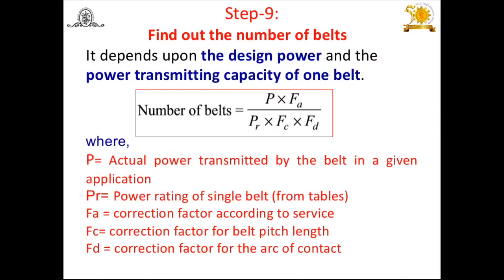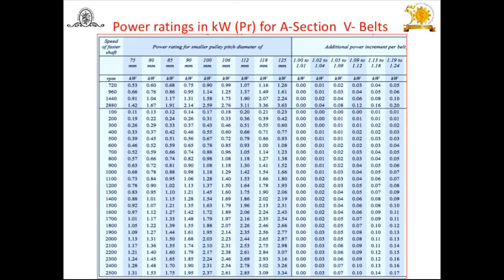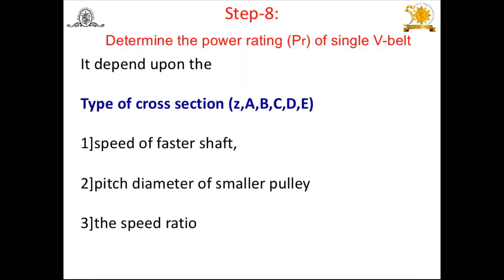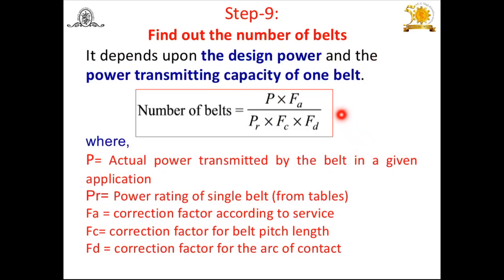Step 9 (final step): Find the number of belts N using the expression: N = (P × FA) / (PR × FC × FD), where P is the actual power transmitted, FA is the correction factor for service condition (Step 1), PR is the power rating of a single belt (Step 8), FC is the correction factor for pitch length (Step 6), and FD is the correction factor for arc of contact (Step 7). Substituting all values gives the required number of belts.